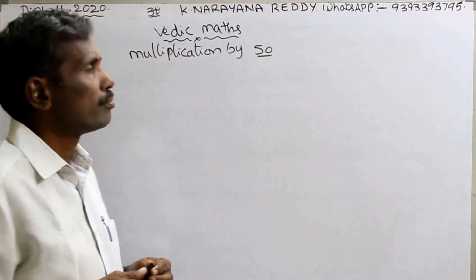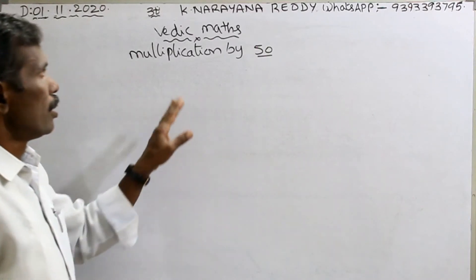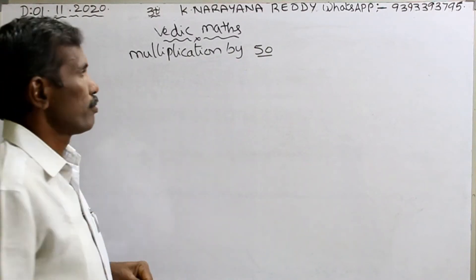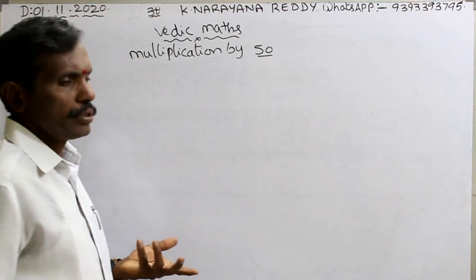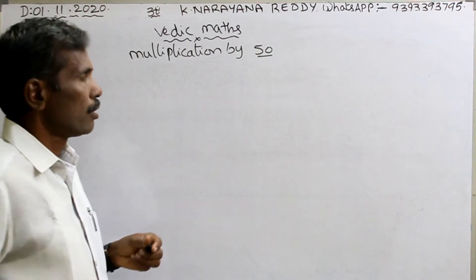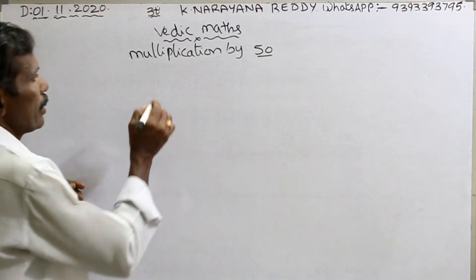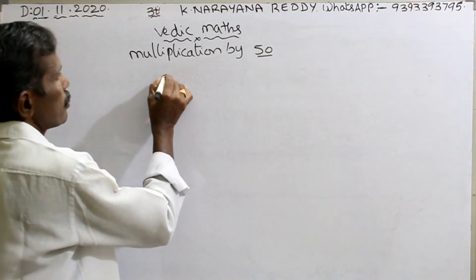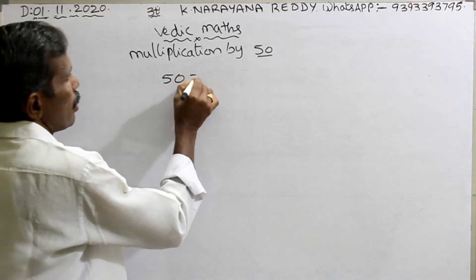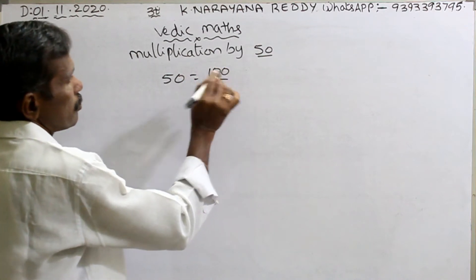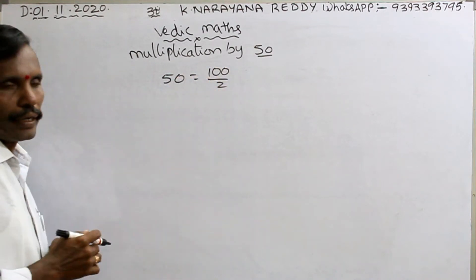Welcome to the channel. Multiplication by 50 — simple, same logic. 50 can be written as 100 divided by 2. That's the trick.